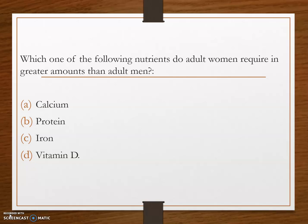Next question: which one of the following nutrients do adult women require in greater amounts than adult men? Options are: option A, calcium; option B, protein; option C, iron; and option D, vitamin D. The answer is option C, iron. Iron is required in larger quantities by adult women than adult men.